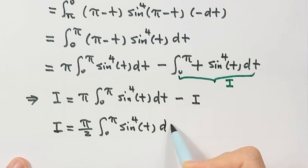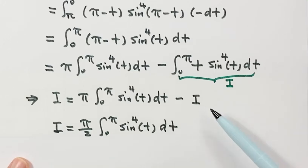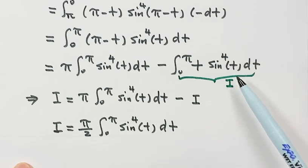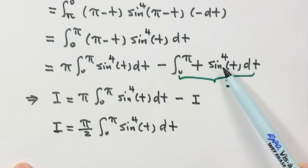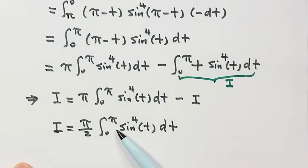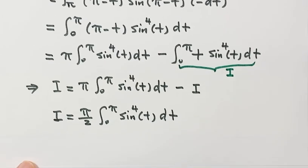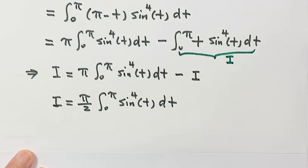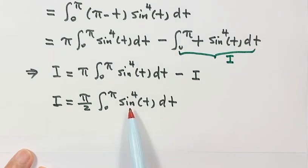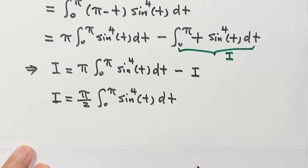Looking back, the reason we set x equals π minus t at the beginning was so we could get to this point, giving us a new integral. Comparing to the original one, this one is easier because there is no variable before sine — just sine to the fourth. To solve this, we need to reduce the power, since sine to the fourth equals sine squared, squared.